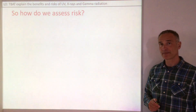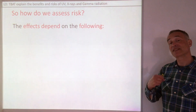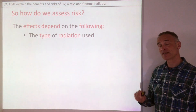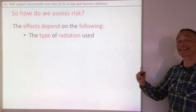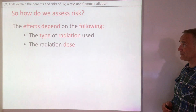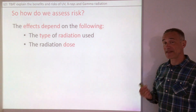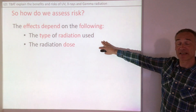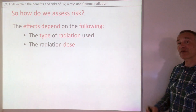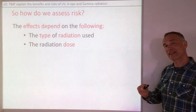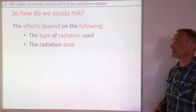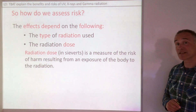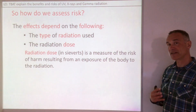So how do we assess risk? The effects of being exposed to ionising radiation depend on the type of radiation used — ultraviolet has a lower frequency than gamma so it doesn't carry as much energy. It also depends on the dose, which depends on how much you're exposed to, how much energy the radiation carries, and how long you're exposed to it. A short x-ray gives much less risk than a much longer x-ray. Radiation dose is measured in sieverts — it's a measure of the risk of harm resulting from exposure of the body to radiation.